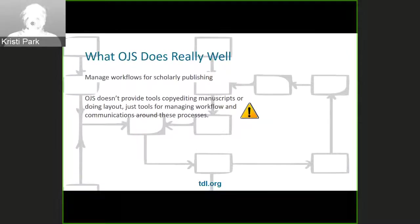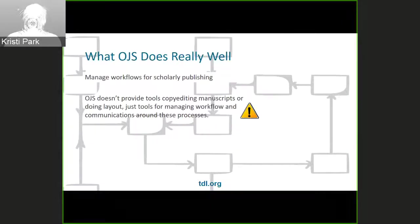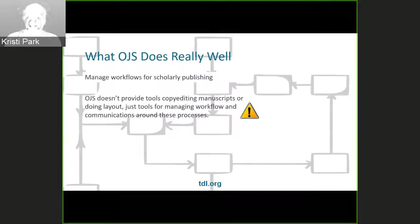If you aren't doing peer review or copy editing or you don't want to do those things in OJS, then you may want to consider using a content management system like WordPress to publish your articles rather than OJS. Another caveat is that OJS doesn't provide tools for doing the copy editing and layout themselves — just the tools for managing workflow and communication around those processes. You have to have PDF or HTML creation tools for making those final proofs of articles, and then upload them into the system.